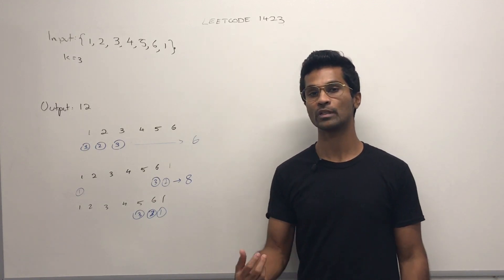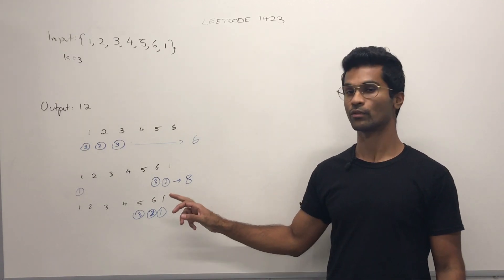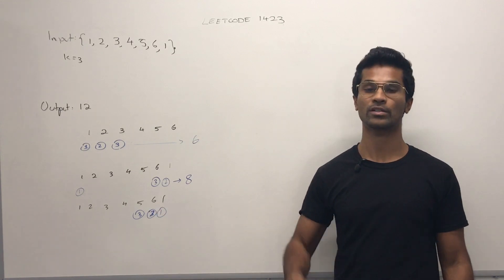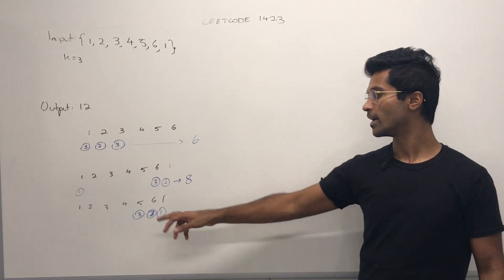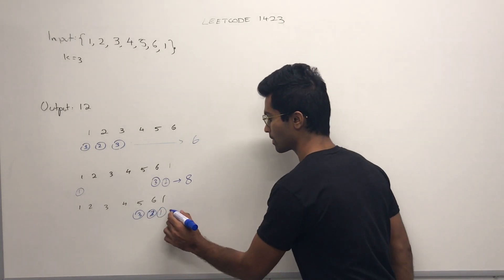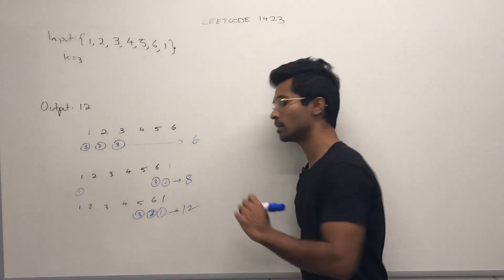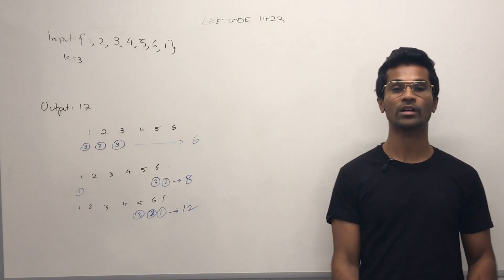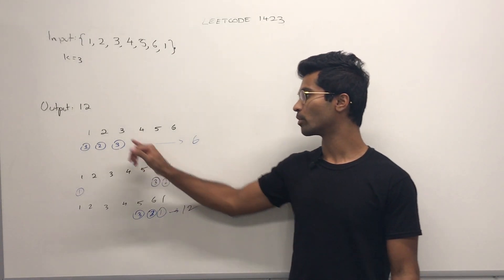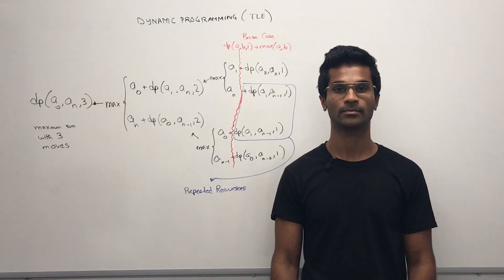If we select the last one as our first move, the last six as our second move, and the last five as our third move, our score is going to be 12. That's the output for this question.